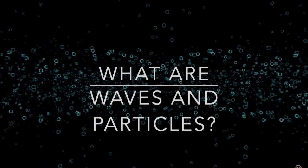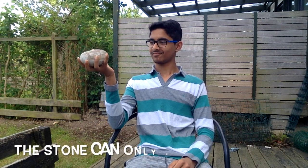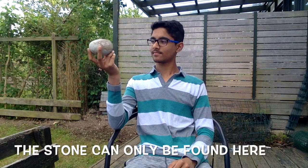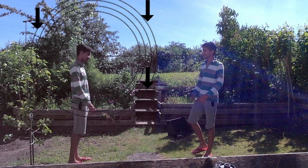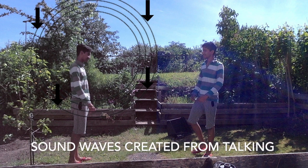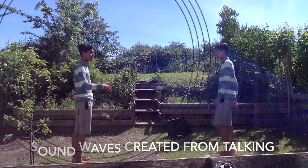Now, what are waves and particles? So this stone is made of particles. It only has one place in the whole universe. You can't find it anywhere else. And this is a wave. You can find it over here, over here, here, and also here. You can find it in multiple places at the same time.